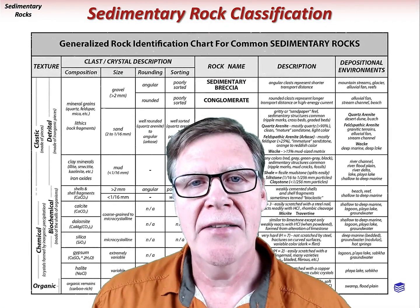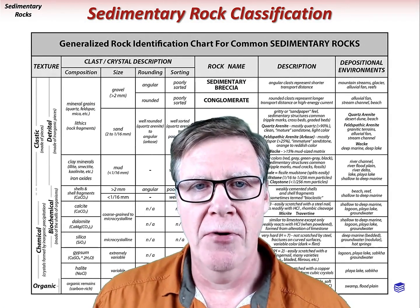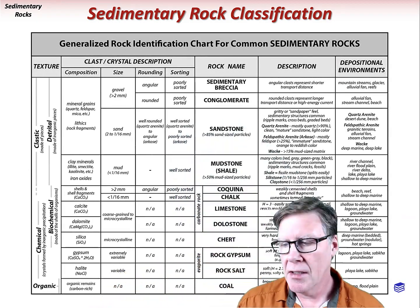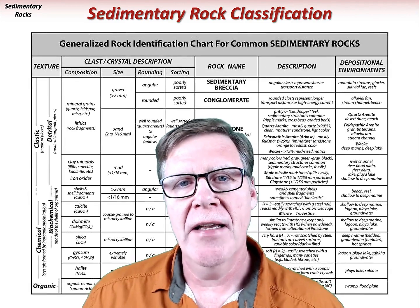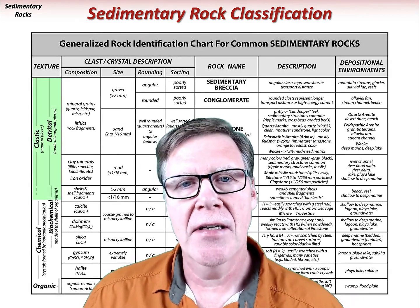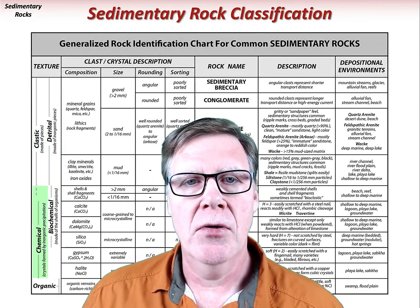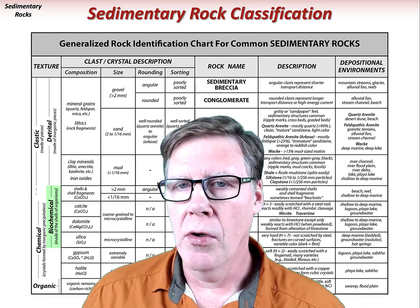This is a rock identification chart for sedimentary rocks. It includes the major textures and other descriptive criteria, as well as comments and depositional environment interpretations. To name a sedimentary rock, we need to first identify its texture as either clastic, chemical, biochemical, or organic.